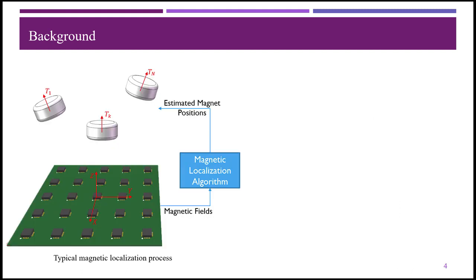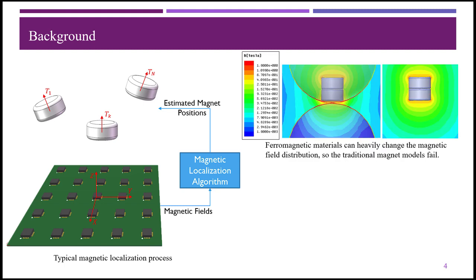The permanent magnet localization method has been widely studied in the past decades, which is very popular for biomedical applications. Many model-based localization algorithms have been proposed to track multiple permanent magnets, but these algorithms rely on an accurate magnet model. Ferromagnetic materials such as the steel spherical shell in FreeBot can heavily change the magnetic field distribution, and the traditional magnet models fail.